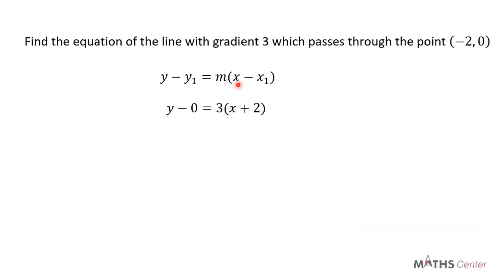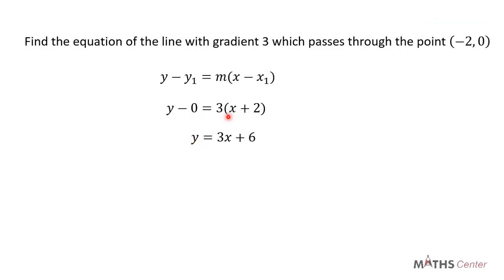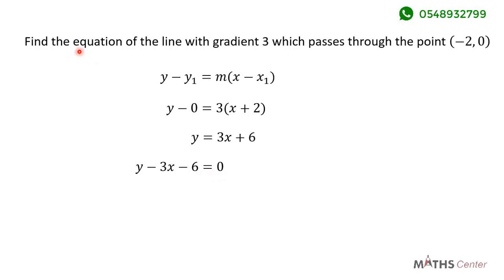So we have x minus negative 2, which gives us x plus 2. Therefore y minus 0 equals 3 times (x plus 2). y minus 0 gives us y. Opening the bracket gives 3 times x which is 3x, and 3 times 2 which is 6. So y equals 3x plus 6. Rearranging gives y minus 3x minus 6 equals 0. So the equation of the line is y minus 3x minus 6 equals 0.